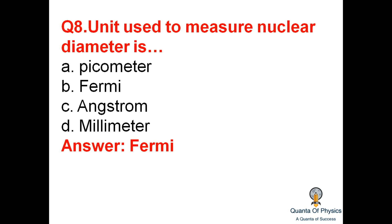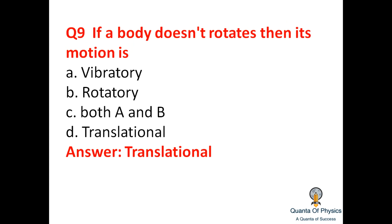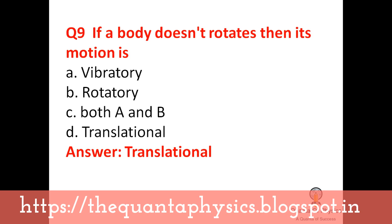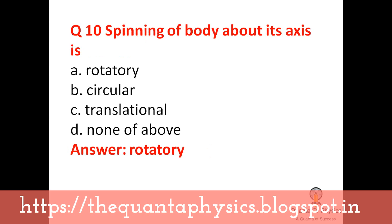The unit used to measure nuclear diameter is fermi, and the angstrom unit is used to measure atomic size. If a body does not rotate, then its motion is translational motion. Spinning of a body about its own axis is rotatory motion.